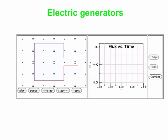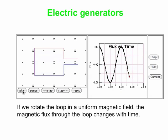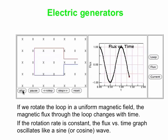So what we're going to do is now we're going to make the loop rotate. And the loop rotates, and you can see that the flux changes as a function of time. And that's great, and we have a graph of flux versus time. And if the rotation rate is constant, then the flux versus time graph oscillates sinusoidally. In this particular case, it actually looks like a cosine graph. And that's, again, a characteristic of rotating a loop at a constant rate.